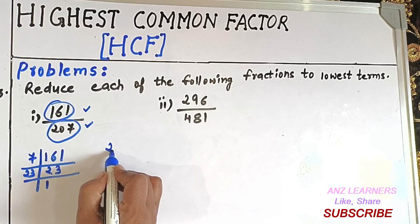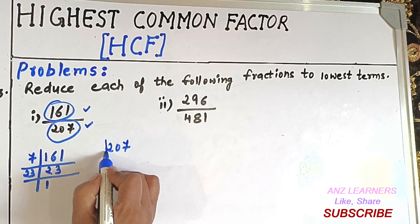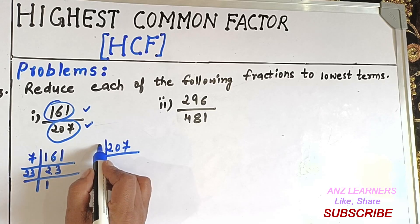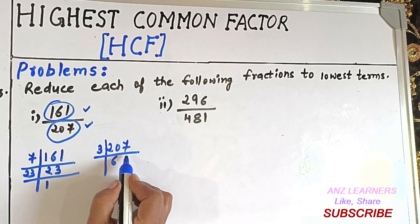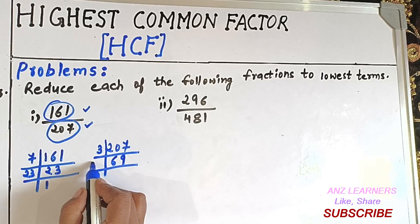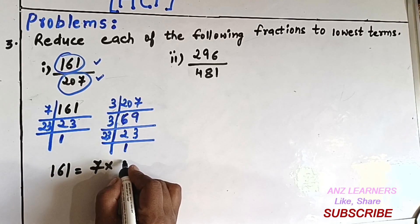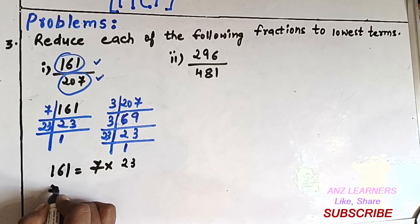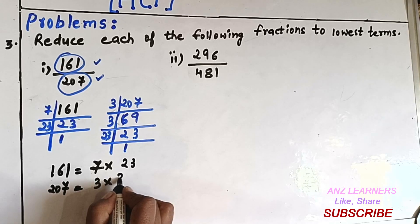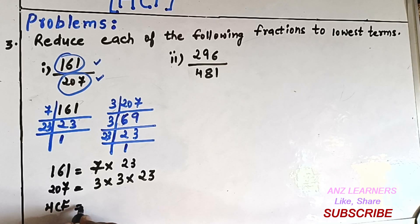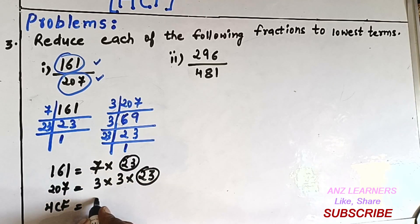For 207, the factors will be - it's divisible by 3. After factoring, we get 207 equals 3 times 3 times 23. So 161 equals 7 times 23, and 207 equals 3 times 3 times 23. The HCF of them will be 23.